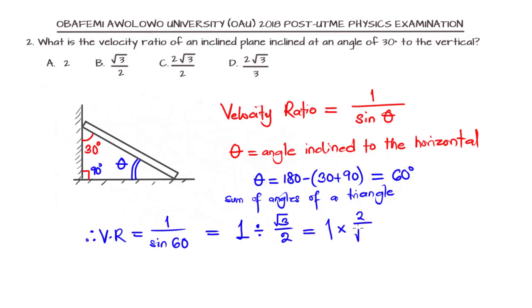If we are to swap, that will be 1 multiplied by 2 over root 3, and that is 2 over root 3. But that is not included in our options for the answer. So what we need to do is rationalize. We multiply the root 3 at the denominator.